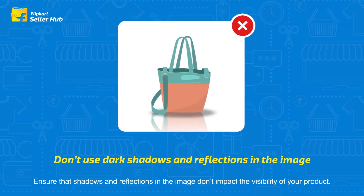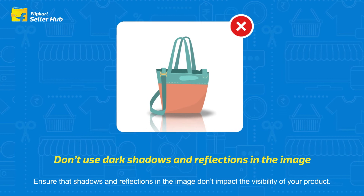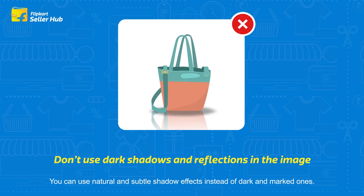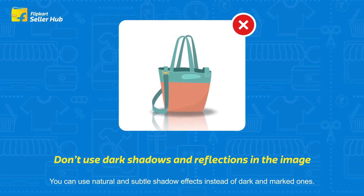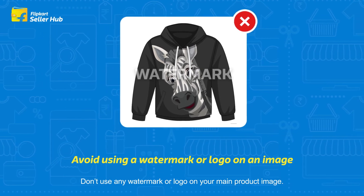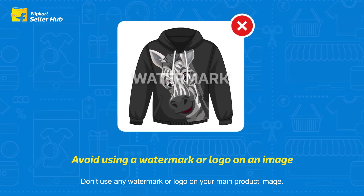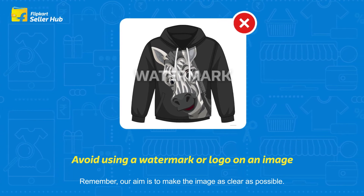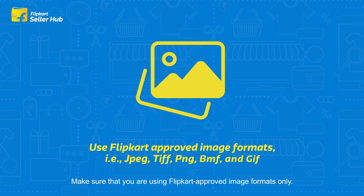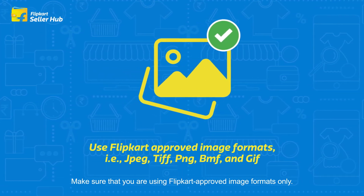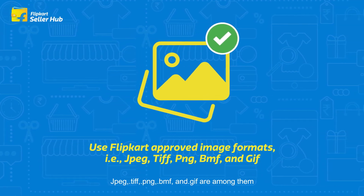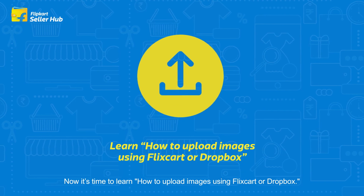Always maintain an optimum image proportion — expanding or squeezing an image may impact image quality, and blurred images can result in reduced sales. Ensure that shadows and reflections don't impact the visibility of your product. You can use natural and subtle shadow effects instead of dark and marked ones. Don't use any watermark or logo on your main product image. Our aim is to make the image as clear as possible.